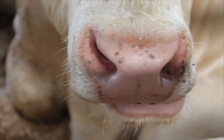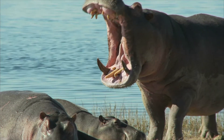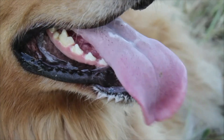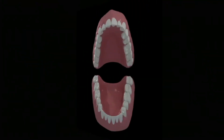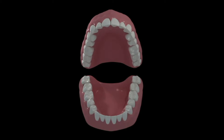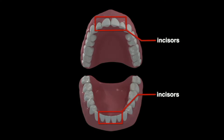All animals' teeth are shaped to suit their particular diet. Humans have four types of teeth. Incisors are located at the front and midline of the mouth. They are relatively flat or chisel-shaped and suited for cutting food.